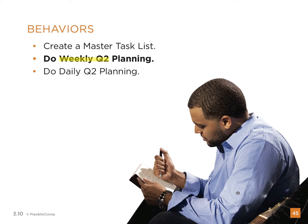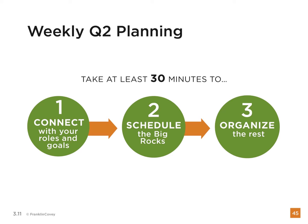In weekly Q2 planning, you need to take 30 minutes — a lot of people do it on Sundays — to connect with your roles and goals that you developed during the last lecture. After that, you schedule in the big things. And lastly, organize the rest of the things around the big tasks.